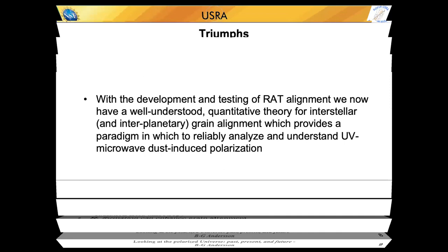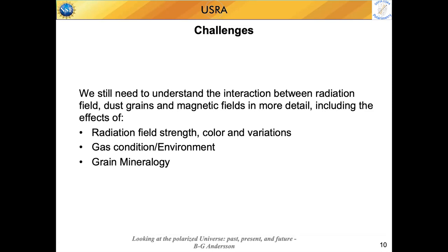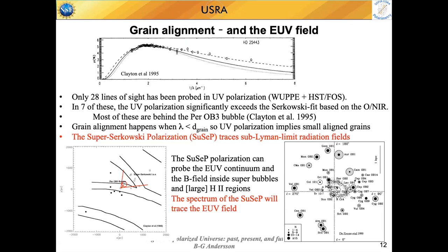That's the triumph in my talk title: because of the development and testing of the theory, we now have in RAT alignment a well-understood, quantitative theoretical paradigm under which we can interpret interstellar grain alignment. The remaining challenges I'll mention: the radiation field strength and color matter for the alignment, and there are a number of issues — the radiation alignment holes and the polarization holes that Brandon mentioned. I'm going to go in the other direction and talk about the UV.